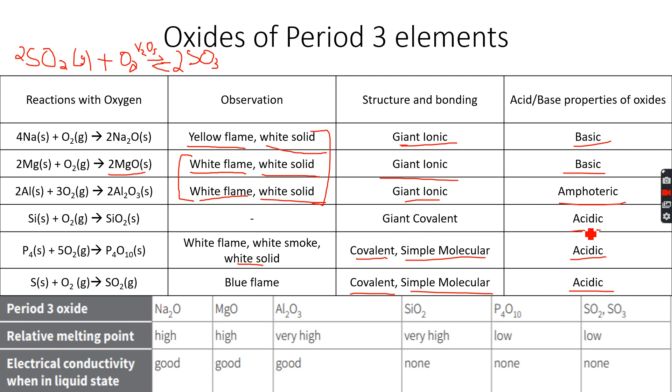So let's look at these acid-base properties now. If you take sodium oxide and add it to a solution of hydrochloric acid, you will get sodium chloride plus water. So you can see this is a neutralization reaction. A base reacts with an acid to form a salt and water.